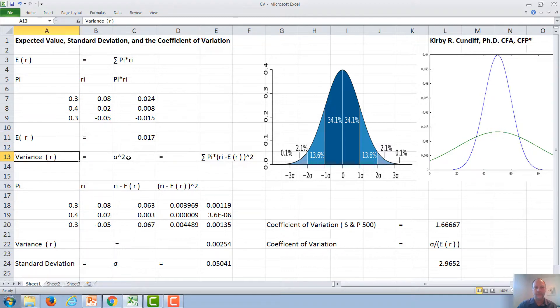To calculate the variance, or the standard deviation squared, we take each probability times the individual rate of returns minus this expected value squared. After that, we will take the square root to get the standard deviation. For example, for our first rate of return, 0.08 minus 0.017 gives us 0.063, 0.02 minus 0.017 gives us 0.003, and negative 0.05 minus 0.017 gives us negative 0.067.